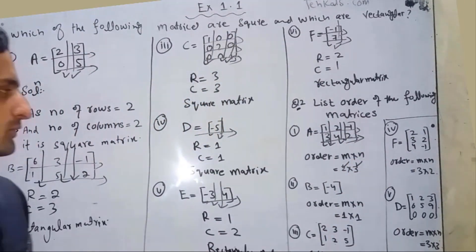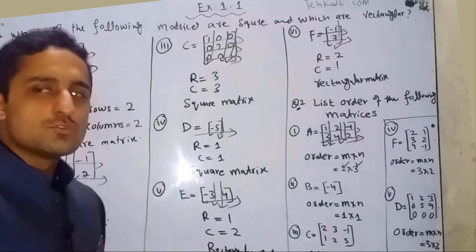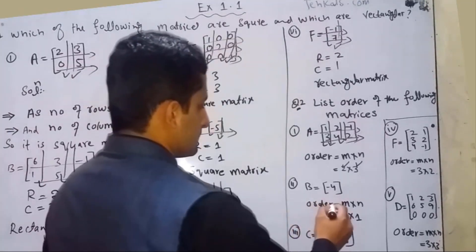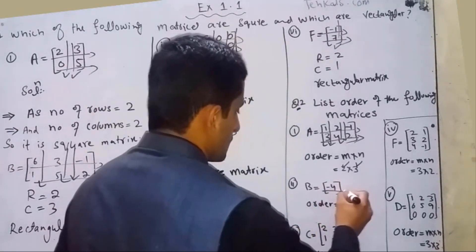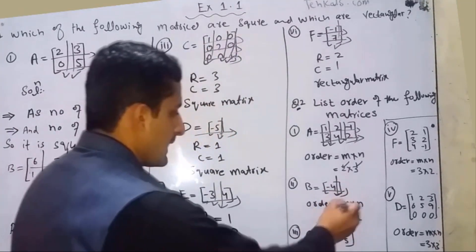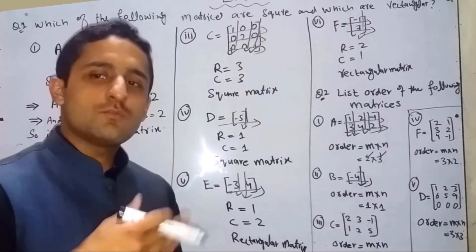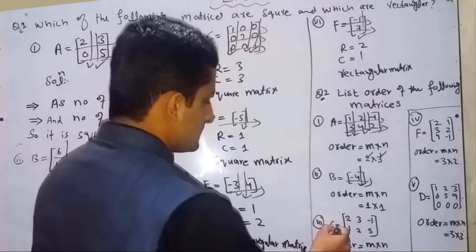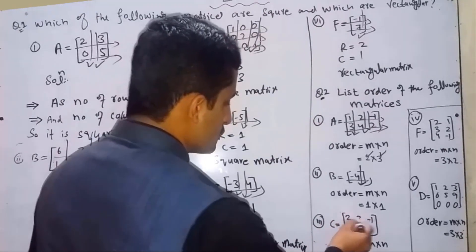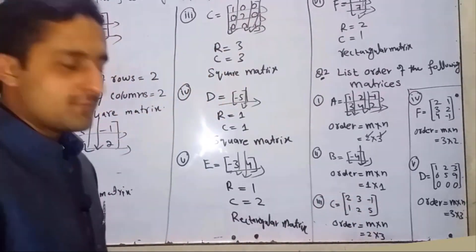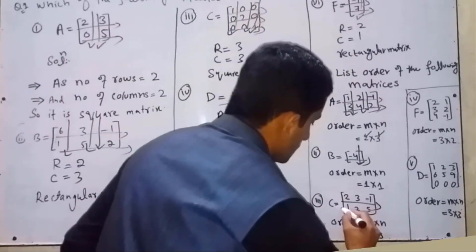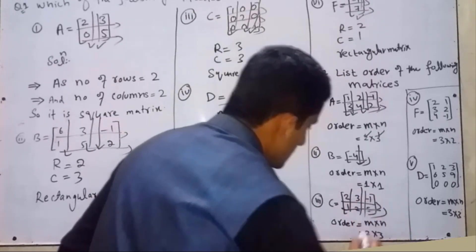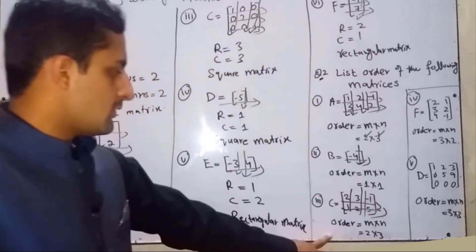Part b: B = [-4]. Number of rows = 1, number of columns = 1. Order is 1×1. Part c: C = [[2,3,-1],[1,1,2]]. Number of rows = 2, number of columns = 3. Order is 2×3.